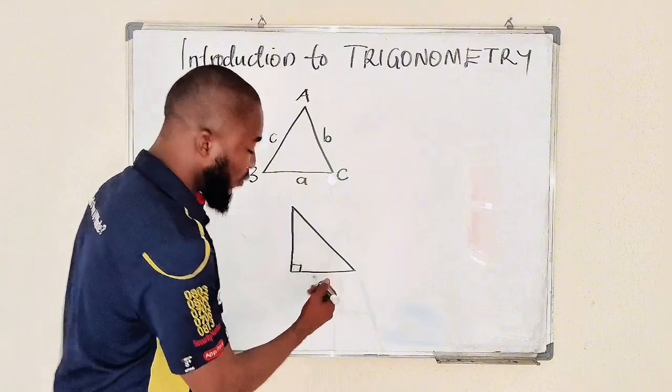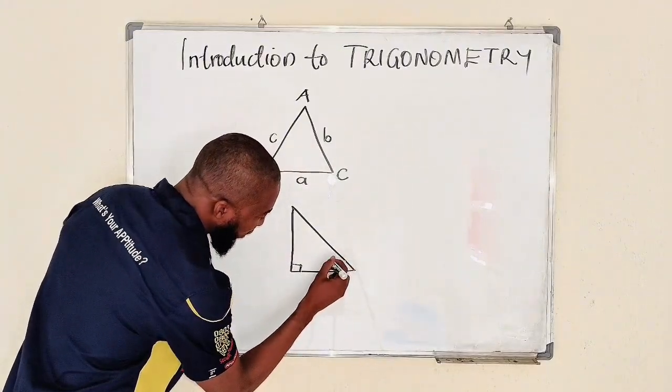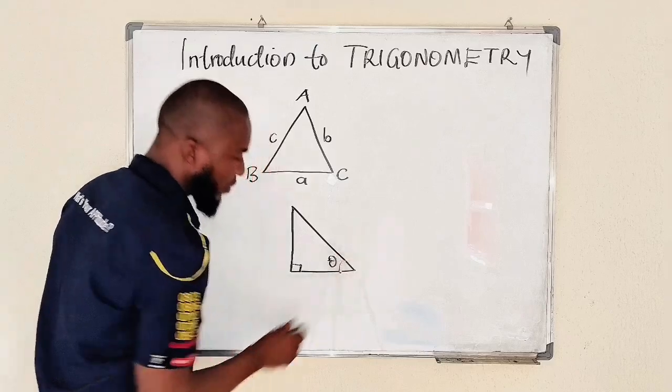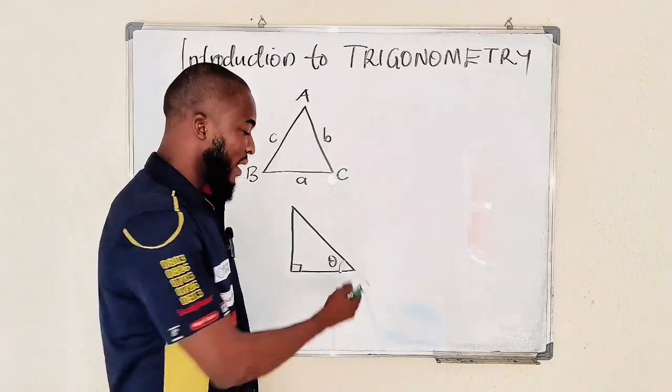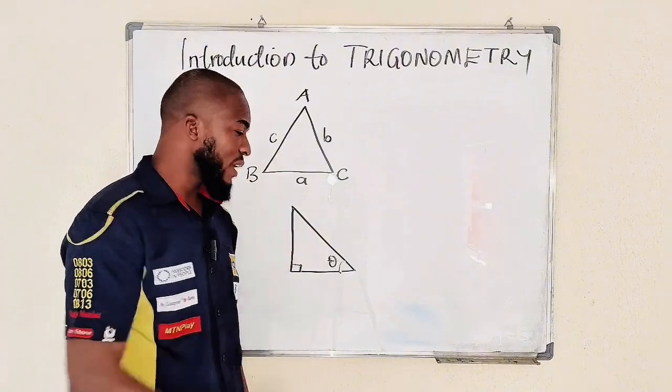In most cases we call it theta, which is a Greek letter. But it's not a must; it's just to indicate an angle which is an acute angle—an angle less than 90 degrees.